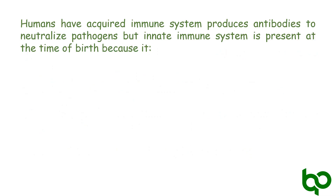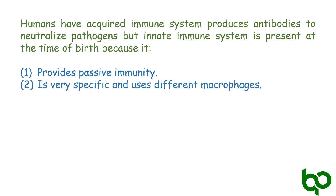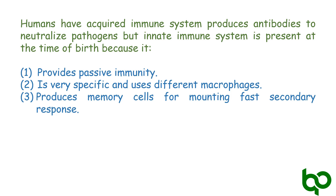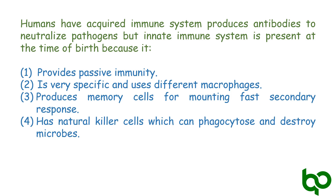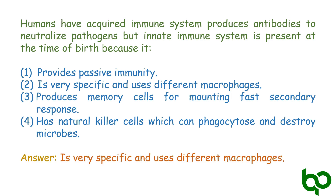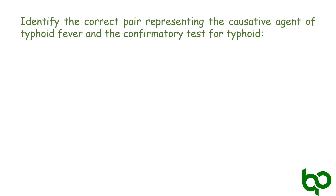Third question: humans have an acquired immune system that produces antibodies to neutralize pathogens, but innate immune system is present at the time of birth. The options are: first, it provides passive immunity; second, it is very specific and uses different macrophages; third, it produces memory cells for mounting a fast secondary response; fourth, it has natural killer cells which can phagocytose and destroy microbes. The answer is option 2 — 'it is very specific and uses different macrophages' — because innate immunity is a non-specific type of defense present at birth. It consists of physical, physiological, cellular, and cytokine barriers; cellular barriers include phagocytic cells and natural killer cells.